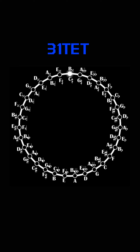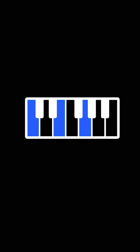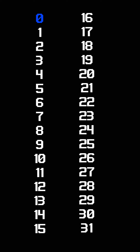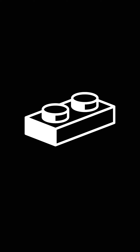A good place to start might be figuring out what chords we have access to in this new system. 31 is actually pretty neat because it gives you access to some chords you might already be familiar with, such as the major chord, now built by adding the fundamental, the 10th and the 18th scale degree of the chromatic 31 scale. This major chord is actually more in tune than the one we have access to in 12-tone equal temperament.